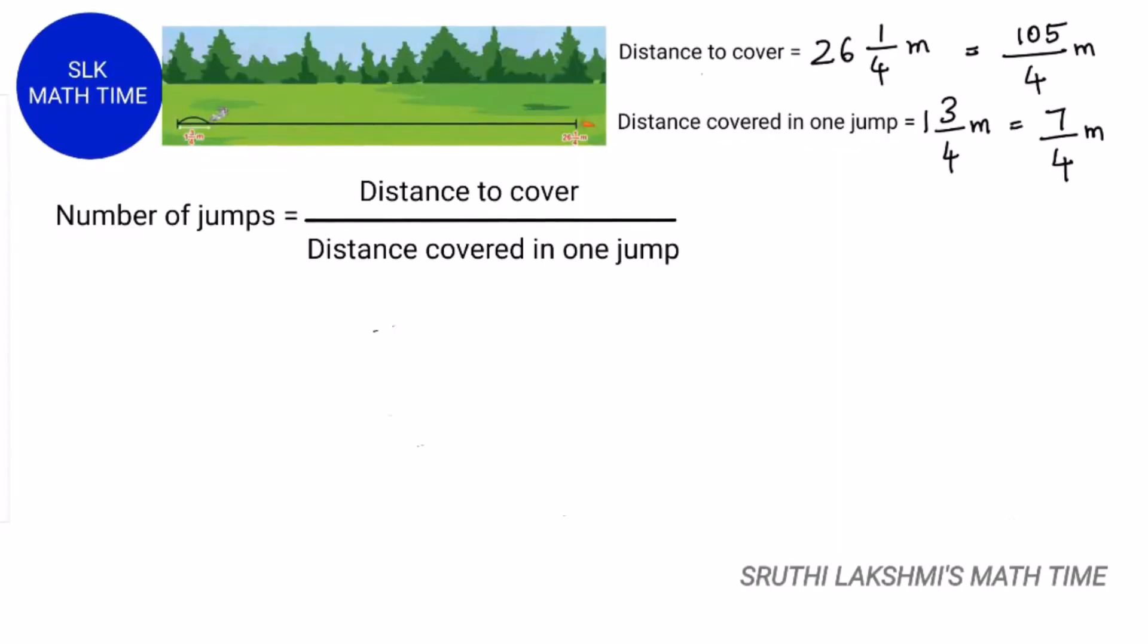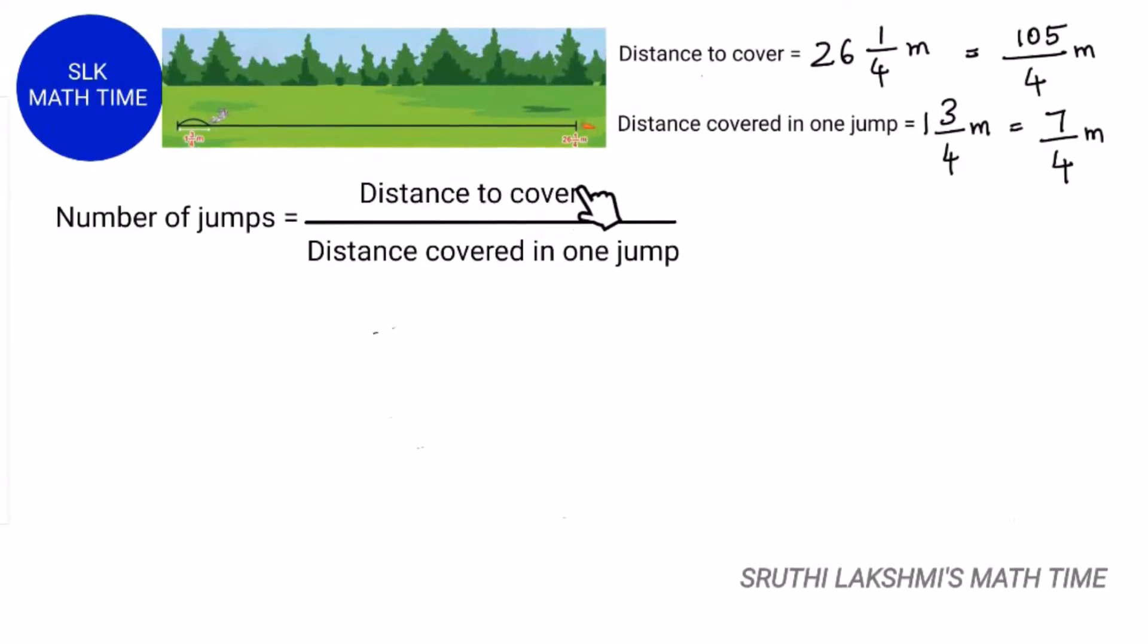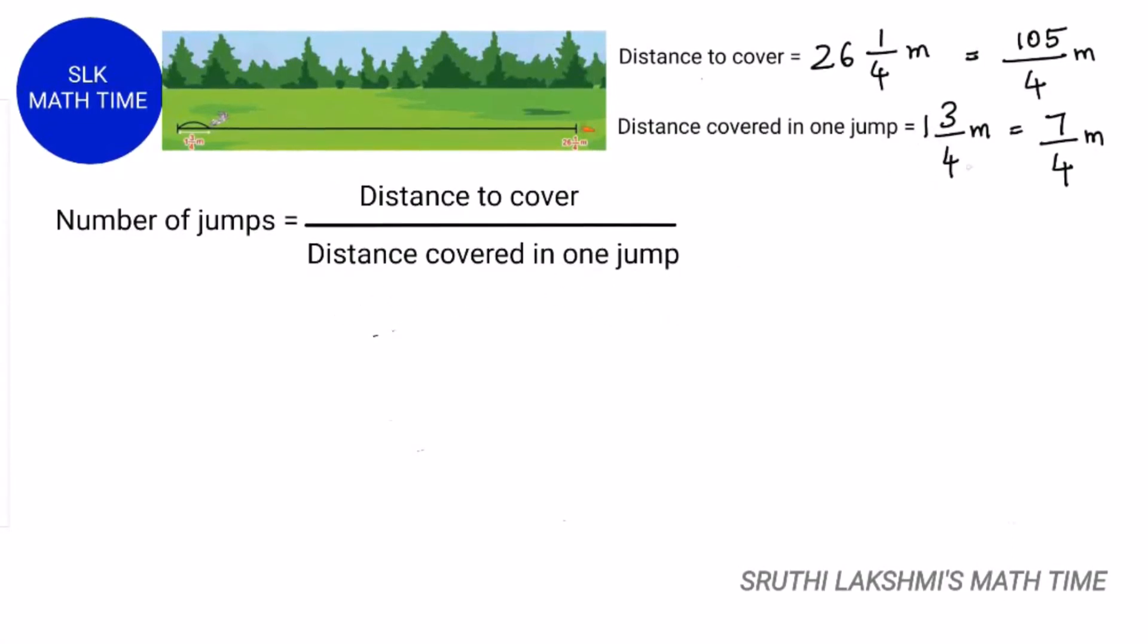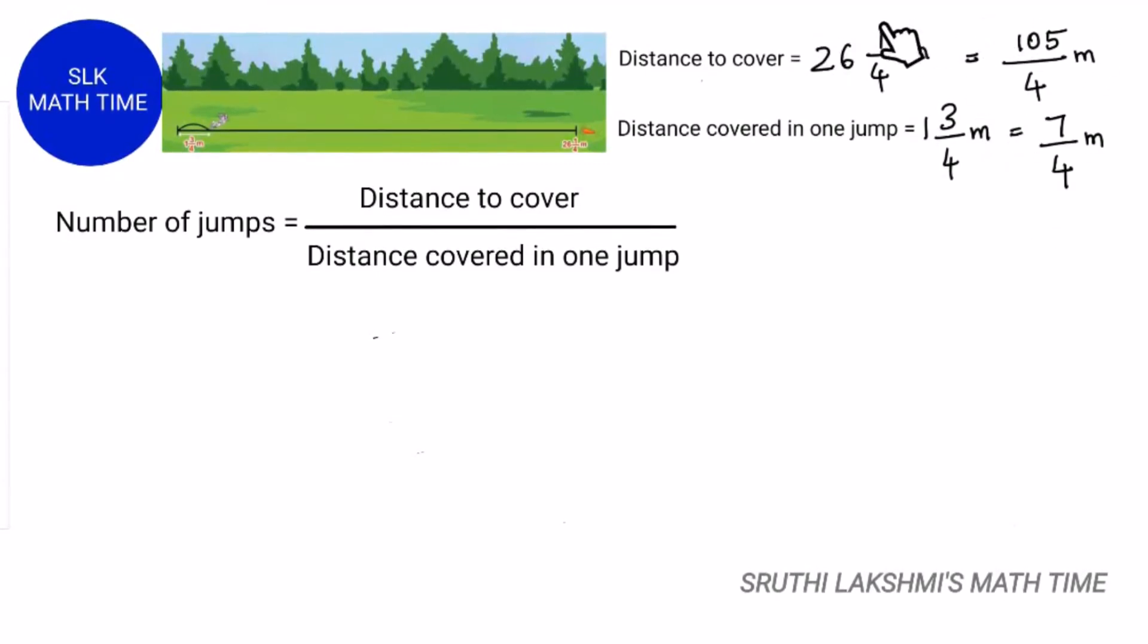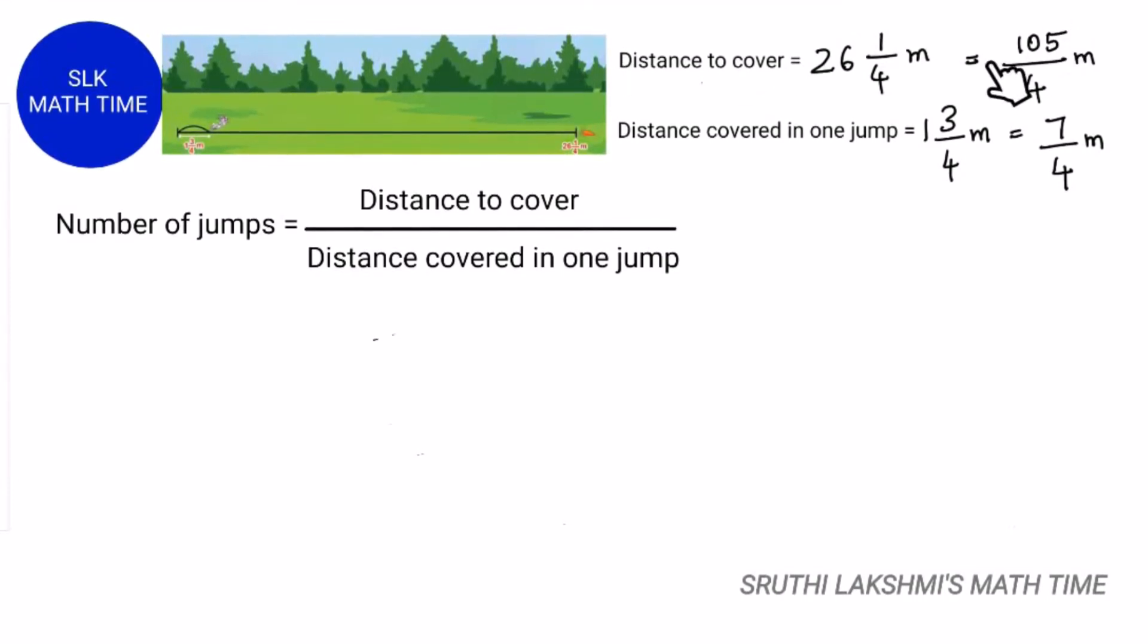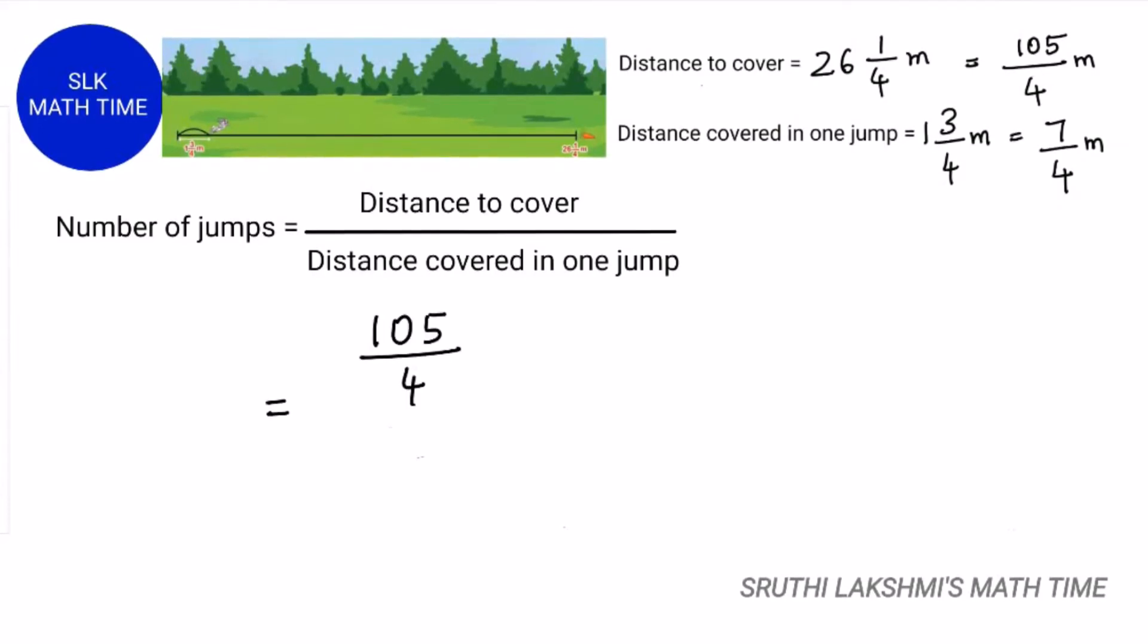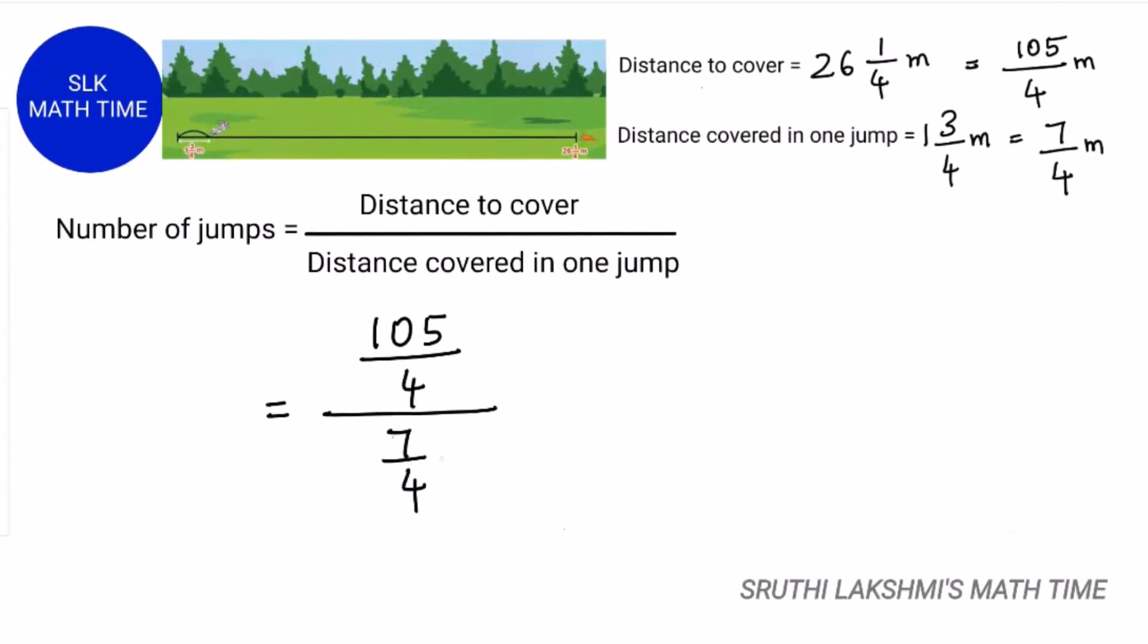So to find the number of jumps, we have to do distance to cover which is 26 1 by 4 meters divided by distance covered in one jump which is 1 3 by 4 meters. And when we converted these two to improper fractions, for the distance to cover we got 105 by 4 meters, and for the distance covered in one jump we got 7 by 4 meters. So it's 105 by 4 divided by 7 by 4.